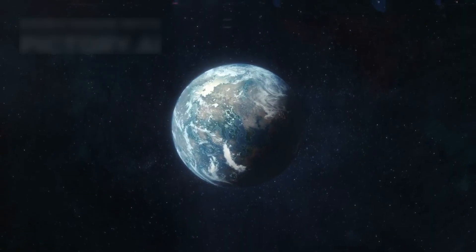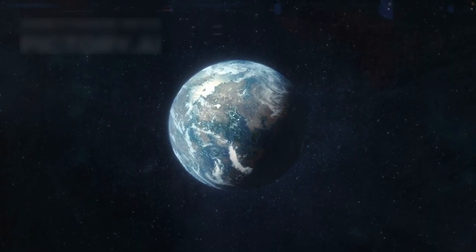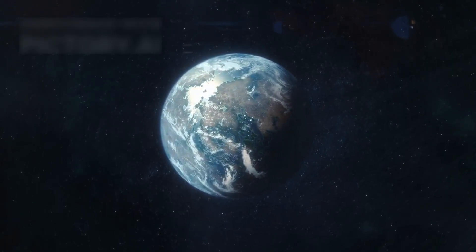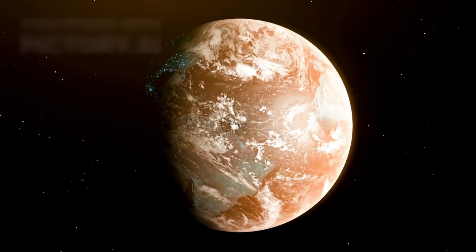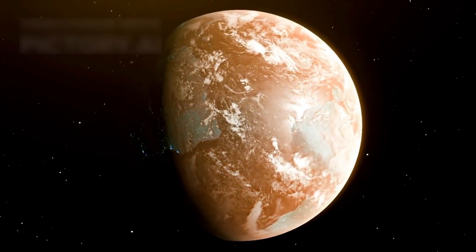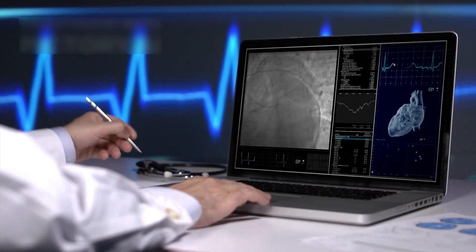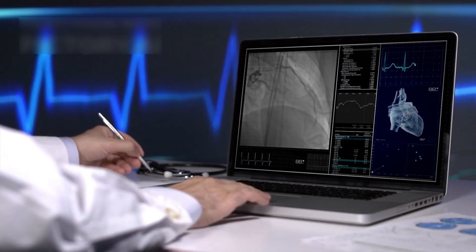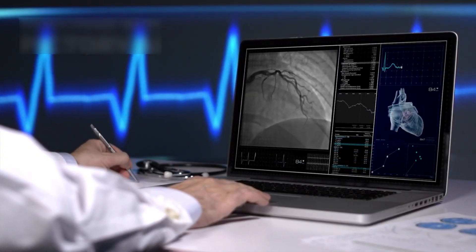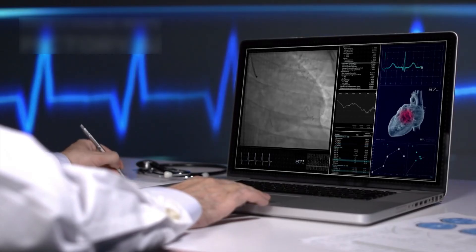The first exoplanets like HIP 65426b were discovered in the 1990s, but only a few have been directly imaged. Most are so far away they're detected only when stellar light is dimmed as they pass. HIP 65426b was spotted in 2017 and imaged directly in September using powerful coronagraphs.